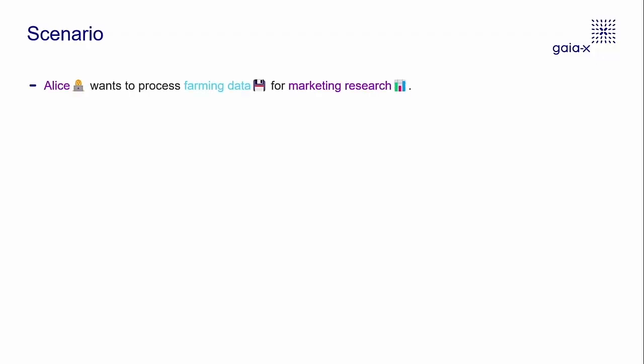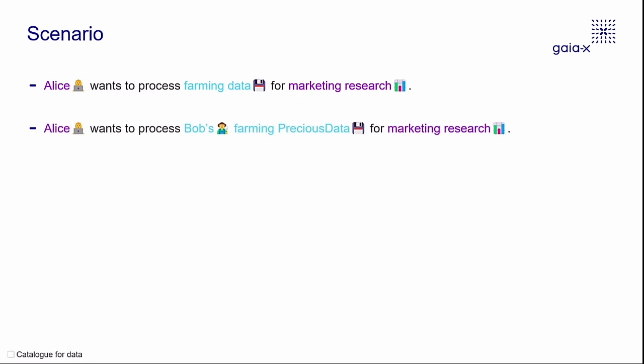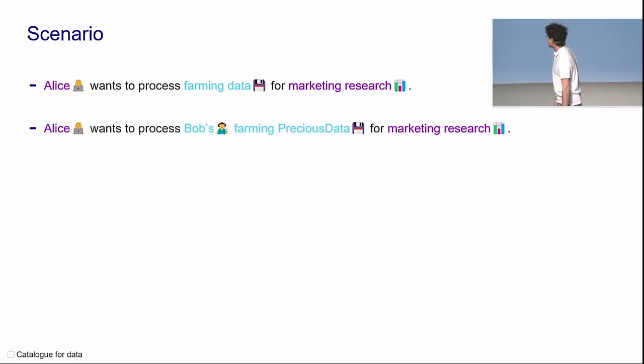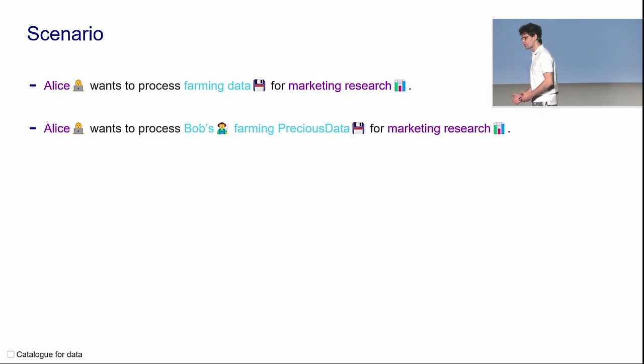We need a scenario. The first scenario: Alice wants to process farming data for marketing research. Where do we find the data? The next scenario is that Alice wants to process Bob's farming precious data — and we know all the data is very precious — for marketing research.